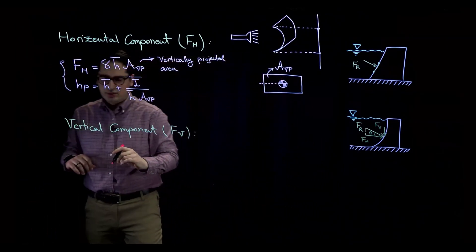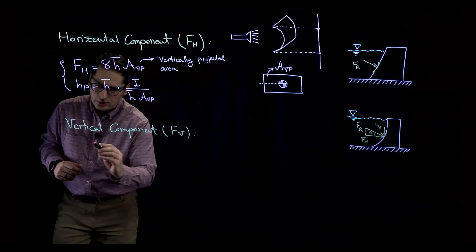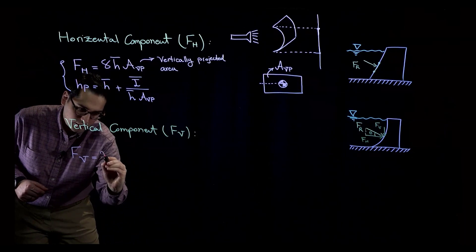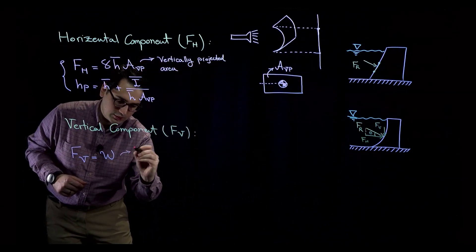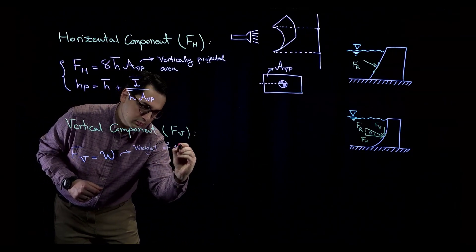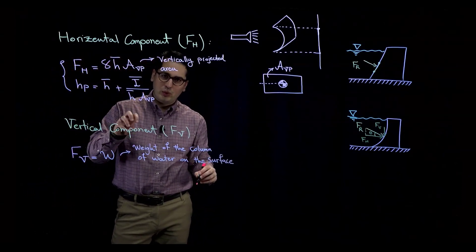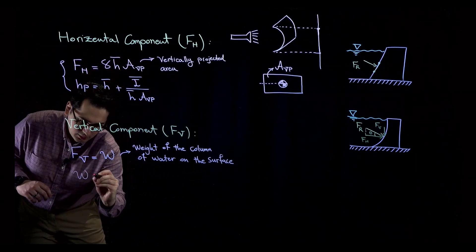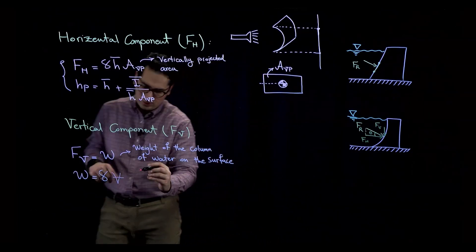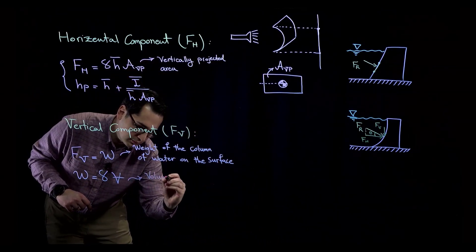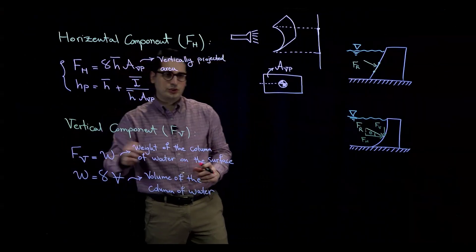Now for the vertical component: the vertical force on a curved surface is very straightforward. You simply calculate the weight of the column of water on top of the curved surface. The weight W equals the specific weight gamma times the volume. So if you know the volume of the column of water on top of the surface and multiply by the specific weight, that gives you the vertical force F sub V.